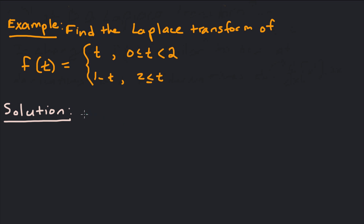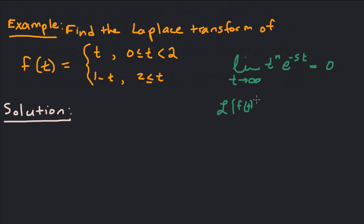Just a few things to recall: the limit as t goes to infinity of t to the n times e to the negative st equals 0. Also, the definition of the Laplace transform is the integral from 0 to infinity of f of t times e to the negative st dt. Just some things to recall before we finish the example.